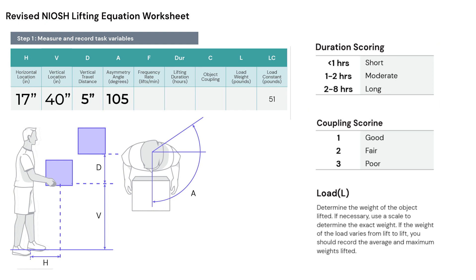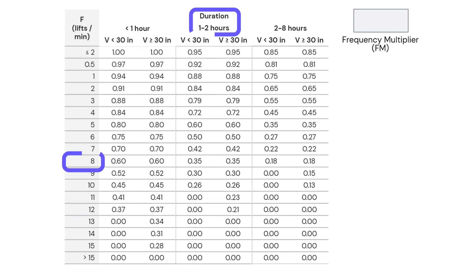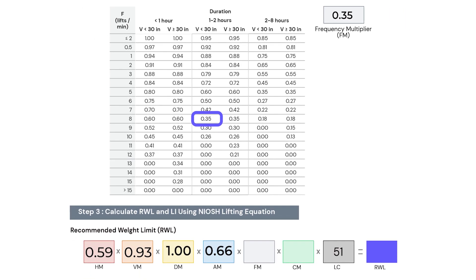We collected a field measurement for the lift frequency in our example, and it's eight lifts per minute for one to two hours. Remember our three-step process. We plug that lift frequency measurement into our lifting frequency conversion table. We pluck the lift frequency multiplier from that conversion table, and we plug the lift frequency multiplier, in our example, 0.35, into the equation.